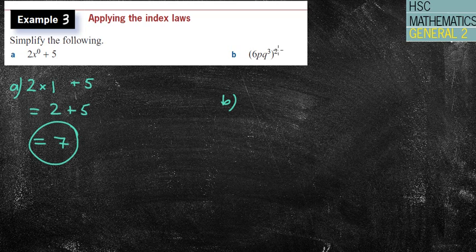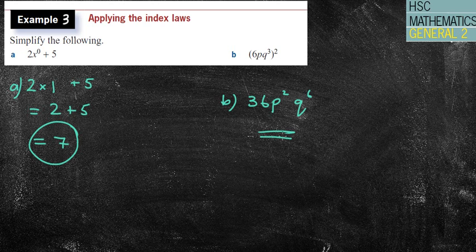now we've got this square here, so it works on both the 6, the p, and the q. So 6 squared is 36. 1 times 2 is 2, because it's p to the power of 1, so it's just 2. And then 3 times 2 is 6, so p squared, q to the power of 6. And that's my answer there.